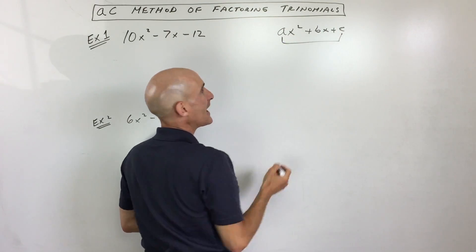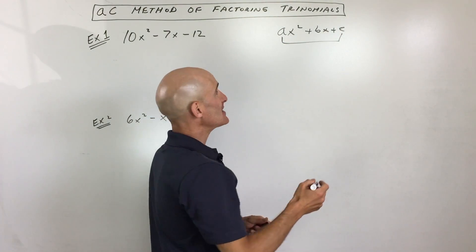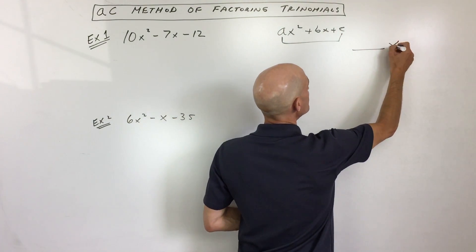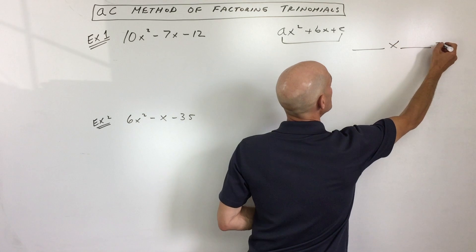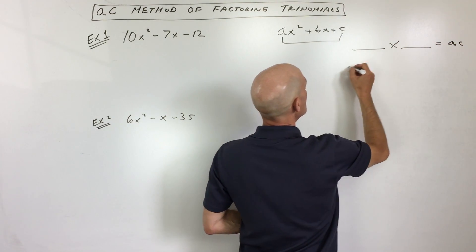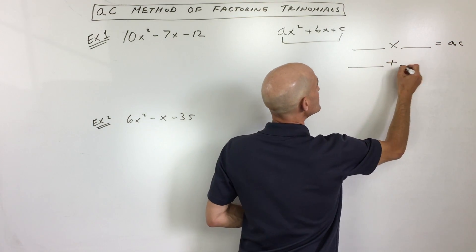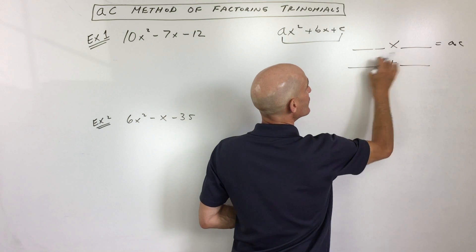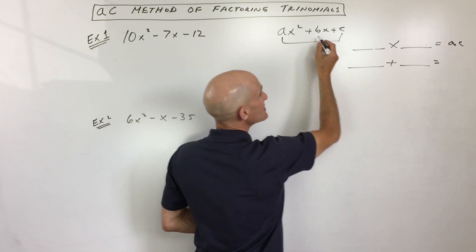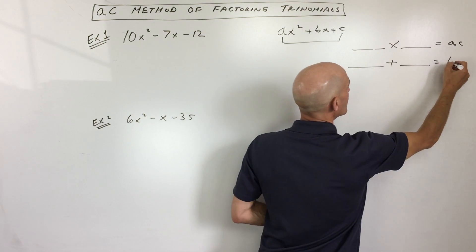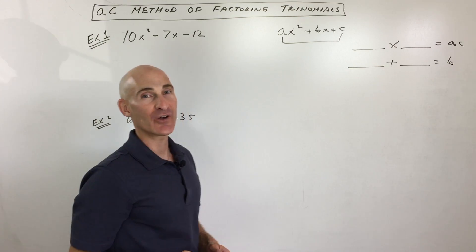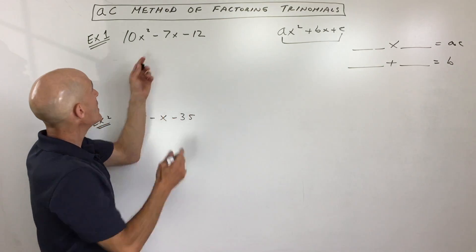What you do is you take the a times c, and you say what two numbers multiply to whatever a times c is. But those same two numbers — same two quantities — have to add to this middle coefficient b. So that's what we're going to do. I'll show you an example.